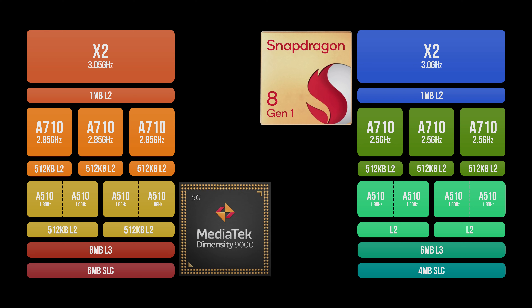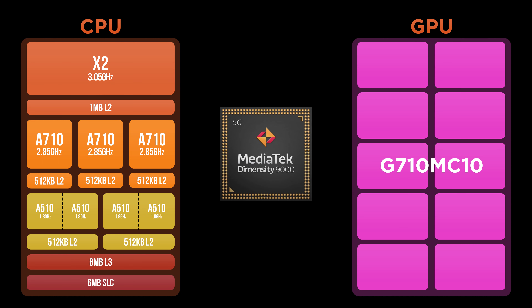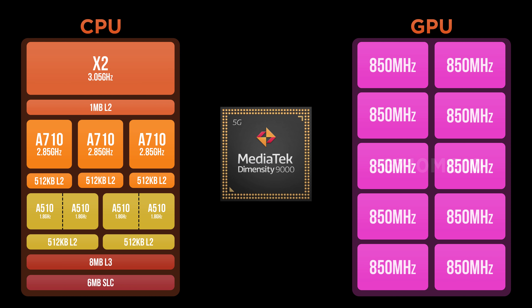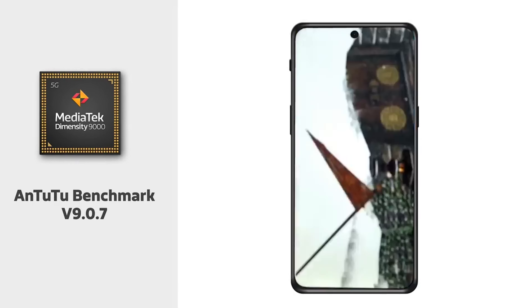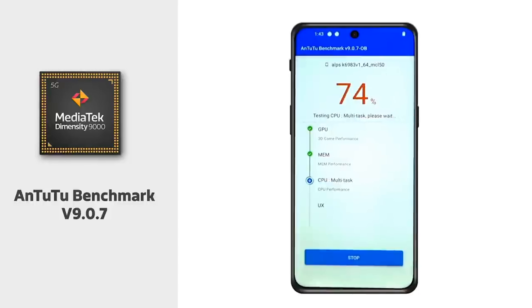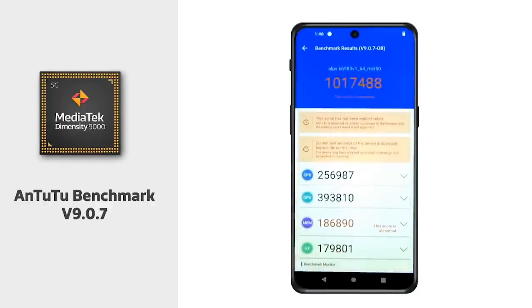Comparing it with the Snapdragon 8 Gen 1 on paper, the Dimensity 9000 has a higher clock speed in both the L3 and the system-level cache. In terms of GPU, MediaTek paired it with their newest Mali G710, specifically the G710 MC10 — a 10-core GPU clocked at 800MHz. MediaTek provided us with some of their internal benchmark results, and this chip earned a score of 1,017,488 points, making it the first SOC to break the 1 million mark.